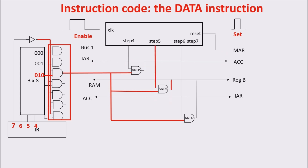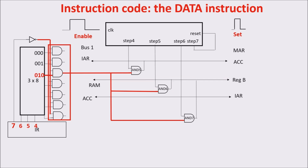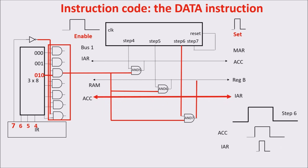When step 5 arrives, AND 6 is ON, and we give an enable pulse to RAM to put the byte to be loaded on the bus, and a set pulse to reg B to memorize it in reg B. When step 6 arrives, the output of AND 7 is ON, and we give an enable pulse to the accumulator putting its content on the bus, and a set pulse to IAR to acquire it. Now we have in IAR the address of the next instruction, and we have moved the data in reg B.